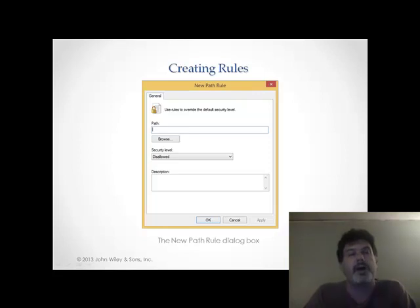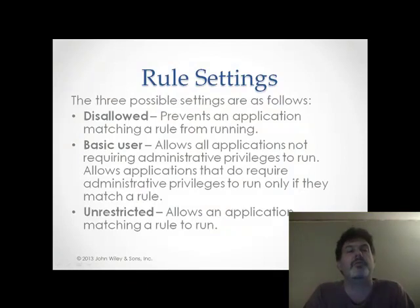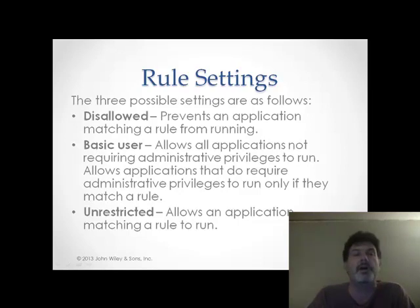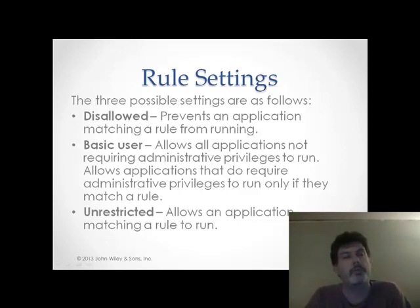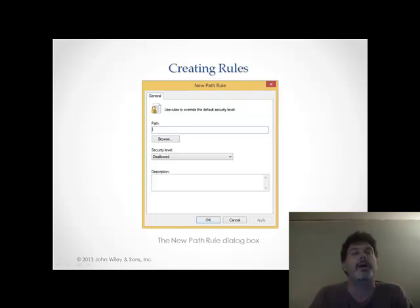For instance, creating a path rule — I've decided to create a new path rule, and here I'm going to be asked for the path of the folder that I want to either allow or disallow, and I'm going to choose the security level. There are three types of security levels: Disallowed, which prevents an application matching those rules from running; Basic User, which allows applications not requiring administrative privileges to run but allows applications that do require administrative privileges to run only if they match a rule. Back to our original screen, I could put a path to my file server folder and allow anything in that folder as unrestricted.